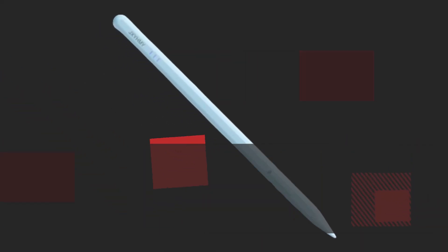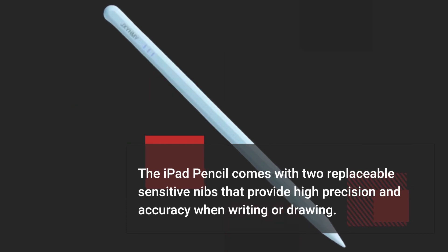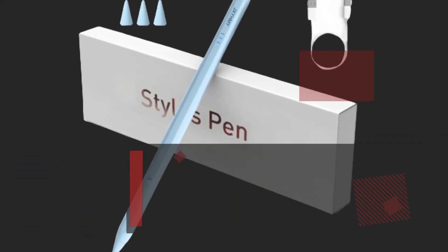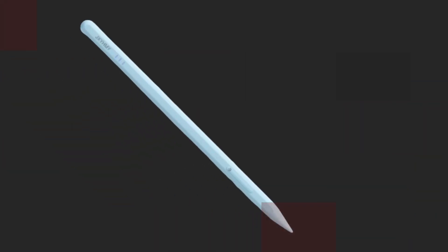The iPad Pencil comes with two replaceable sensitive nibs that provide high precision and accuracy when writing or drawing. No more breaks, drags, or offsets. Plus, it supports tilt sensitivity for a natural drawing experience.